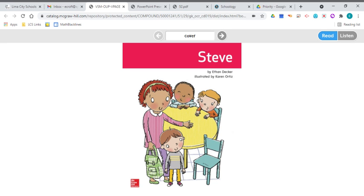Our decodable reader is Steve by Ethan Decker, illustrated by Karen Ortiz. Steve has our long E sound that we just got finished talking about, met with that silent E on the end, making the other E say E.